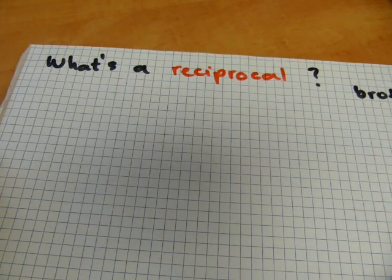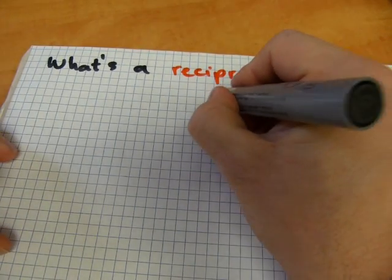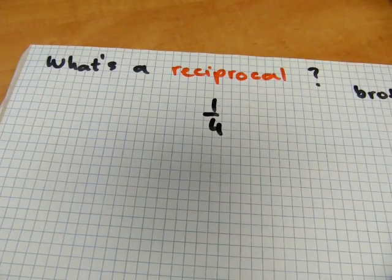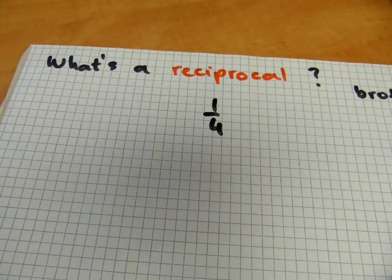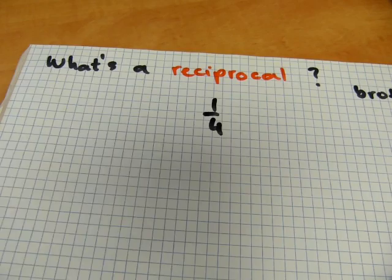So in math, for example, how about a quarter? That's one number. Now we need another number for its reciprocal.